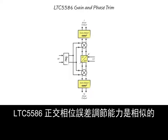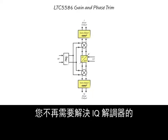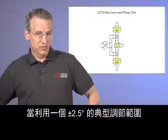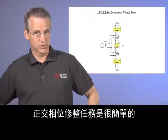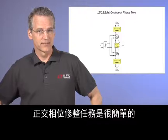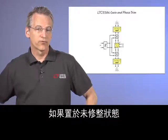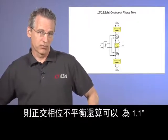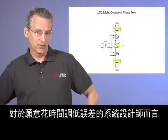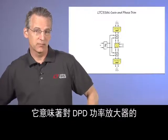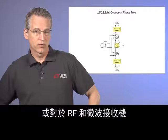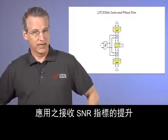The LTC5586 quadrature phase error adjustment capability is similar. You no longer have to settle for whatever phase imbalance the IQ demodulator provides. With a typical adjustment range of plus or minus 2.5 degrees and 0.05 degree steps, the quadrature phase trimming task is simple. If left untrimmed, the quadrature phase imbalance is a respectable 1.1 degrees, but for system designers willing to take the time to adjust down the error, it will mean improved EVM accuracy for DPD power amplifiers, or improved receive SNR for RF and microwave receiver applications.